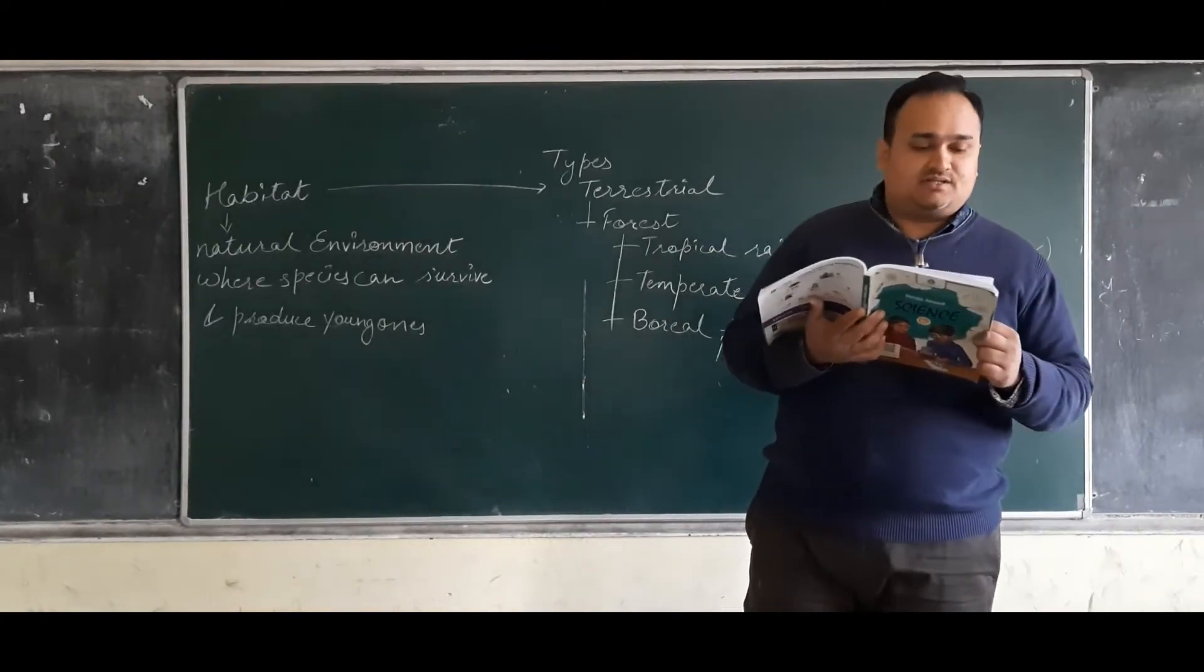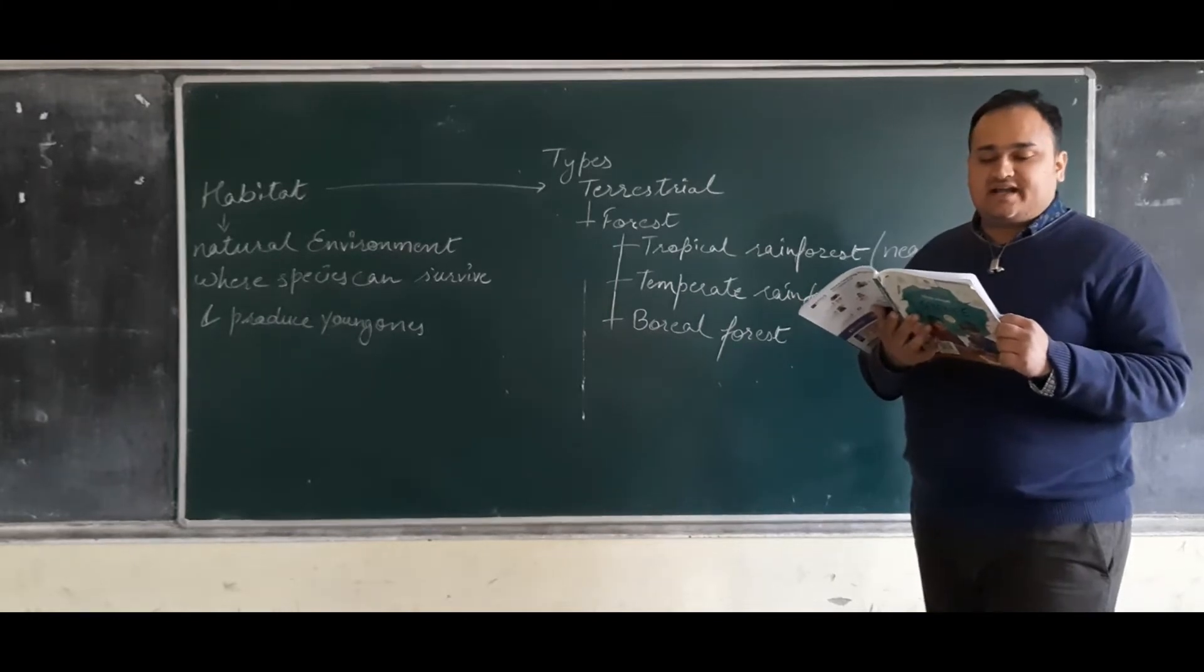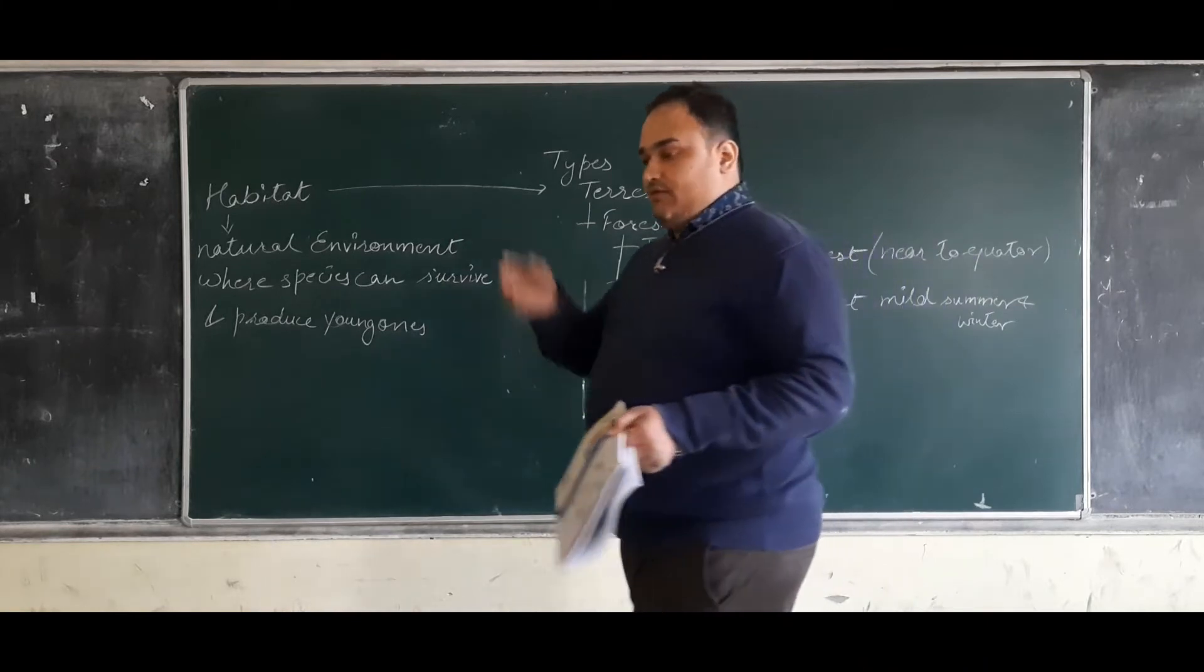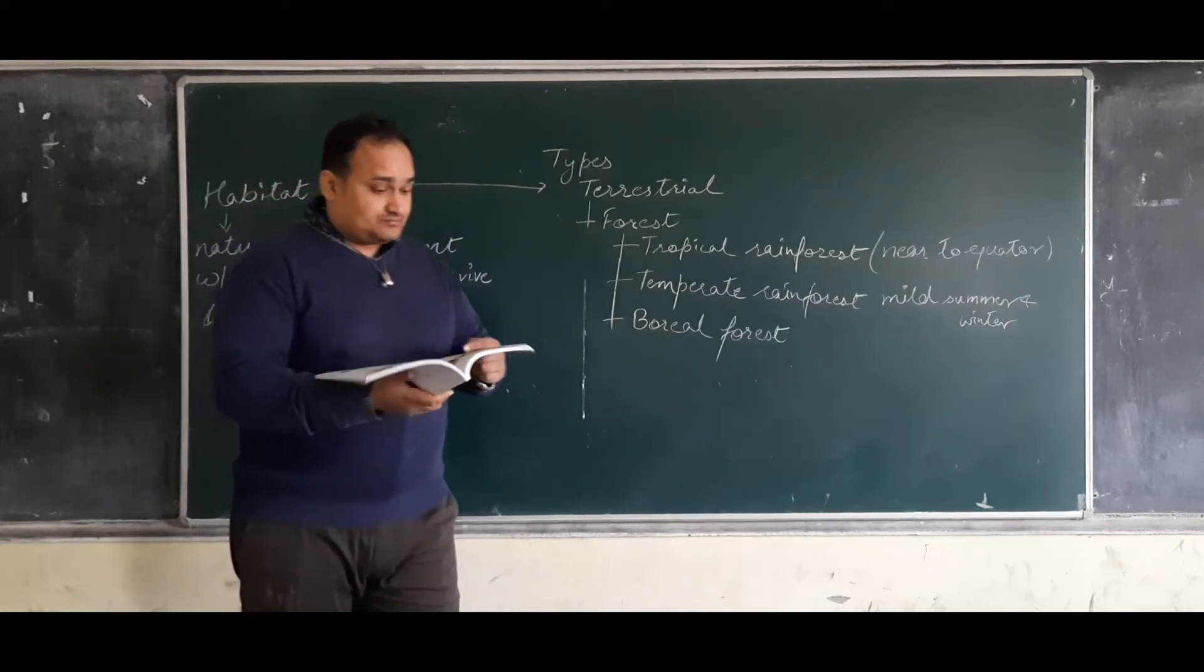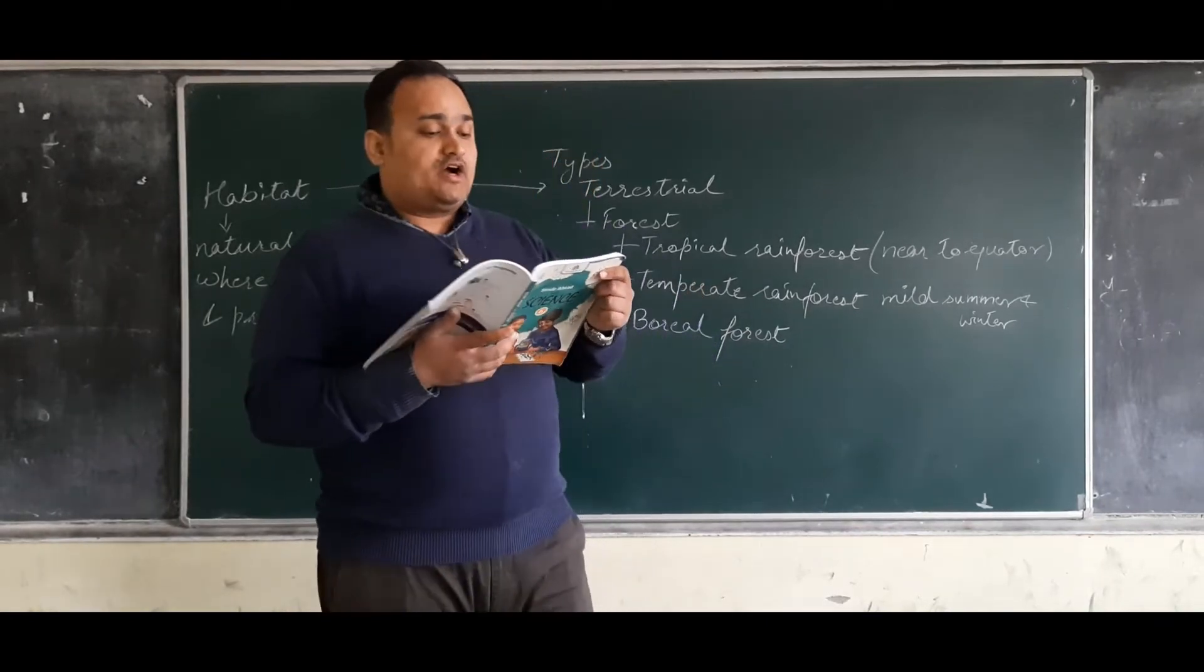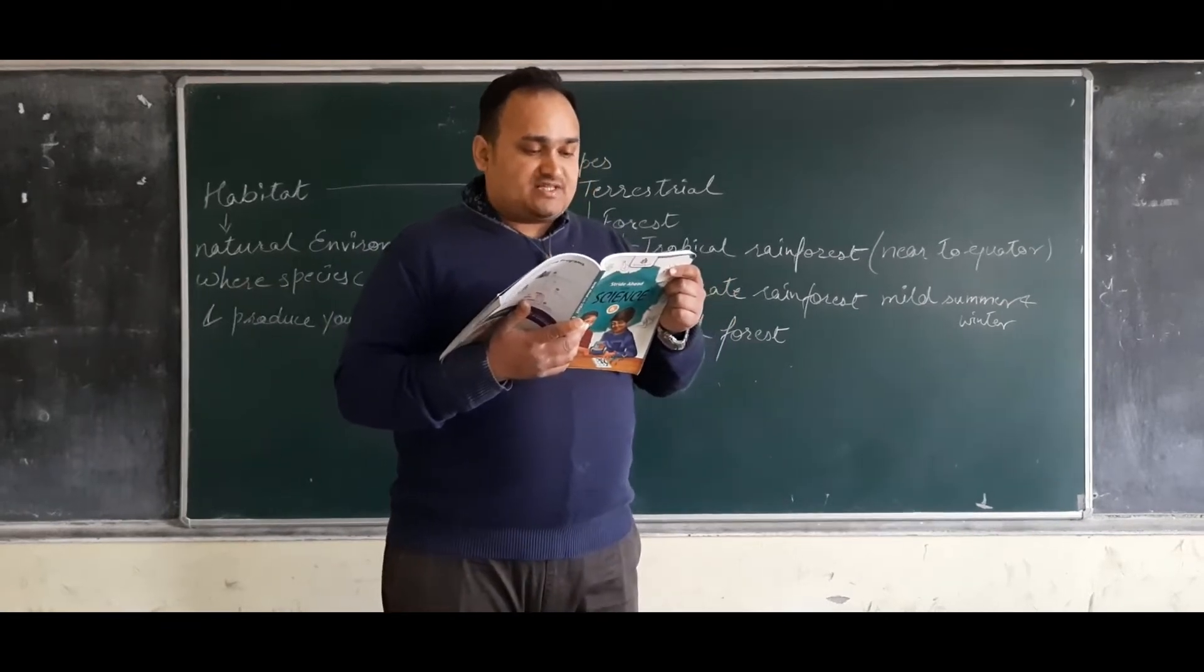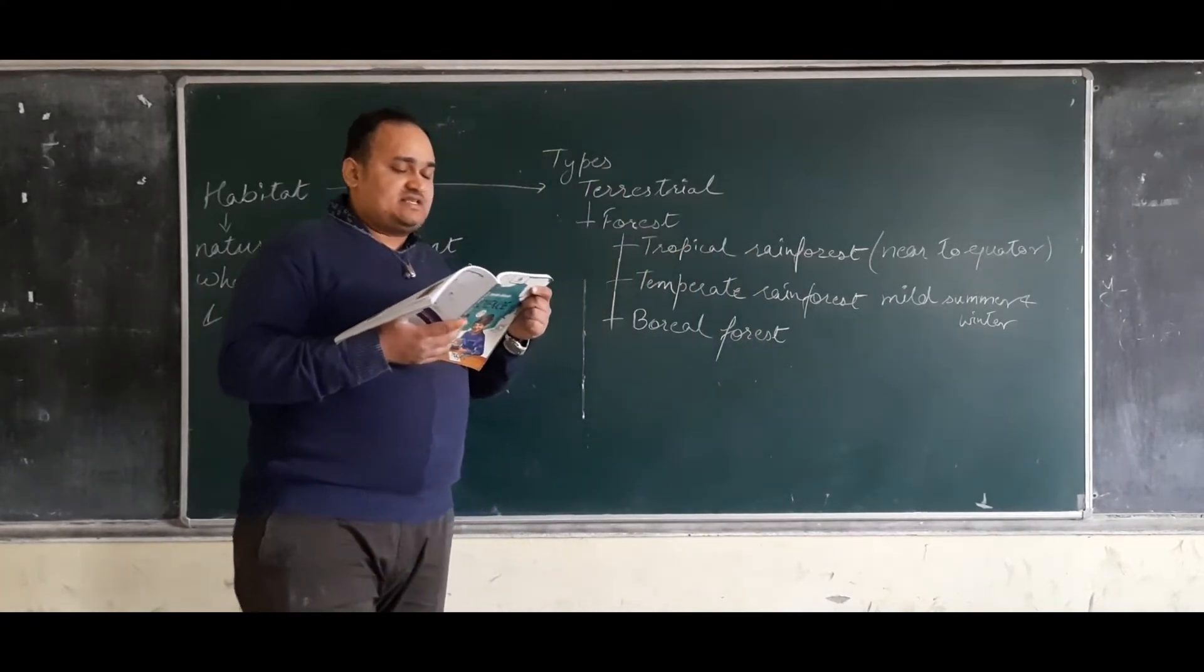Next is boreal forest. The boreal forest, also known as taiga, is the largest land habitat. Boreal forests are characterized by long winters and short summers. Most precipitation is in the form of snow. It is always cold. Animals found here are adapted for long cold winters. They usually have thick fur. Some examples are deer, moose, elk, caribou, snowshoe hare, wolves, grizzly bears, lynxes and wolverines. Other adaptive features such as camouflage are also shown by animals in this region.